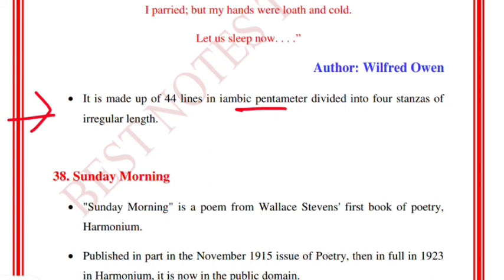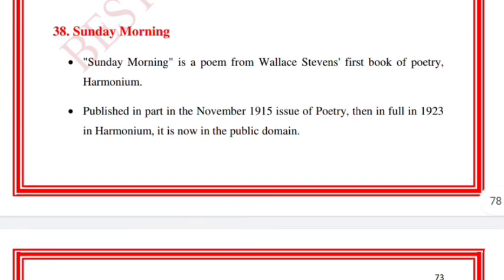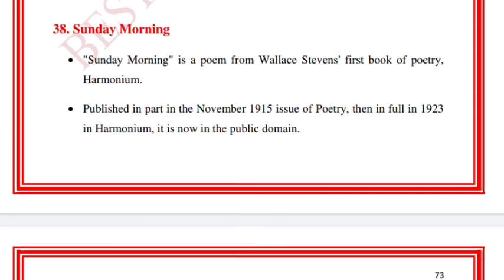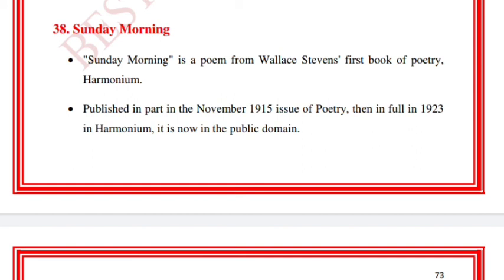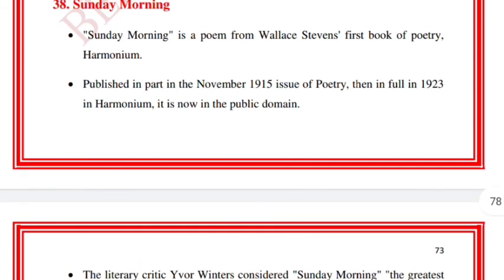Sunday Morning is a poem by Wallace Stevens, from his first book of poetry Harmonium. It was published in part in the November 1915 issue of Poetry magazine, then in full in 1923 in Harmonium. It is now in the public domain.